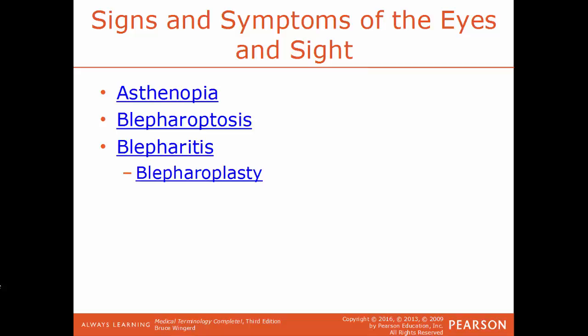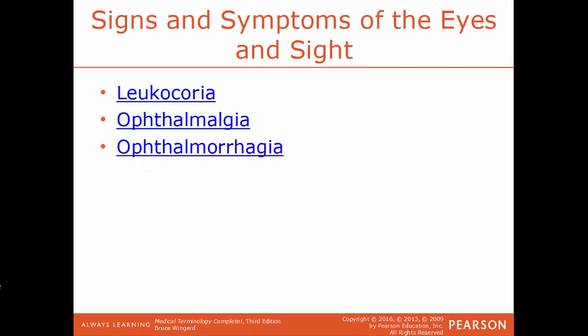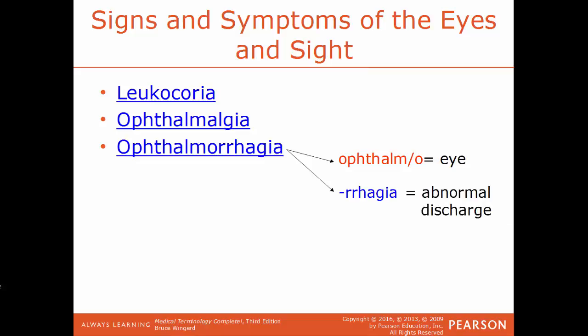Now we'll talk about some particular signs and symptoms of the eyes and sight. Asthenopia is another term for eye fatigue or eye strain — a lack of strength within the eyes. Blepharoptosis is an abnormal sagging or drooping of an eyelid. Blepharitis is an inflammation of the eyelid; if chronic, you may need to surgically repair the eyelid — blepharoplasty, the surgical reconstruction of an eyelid. Leukocoria is having an abnormal white reflection within the retina of the eye. Ophthalmalgia is pain within the eyeball. Ophthalmorrhagia — ophthalmo meaning eye and -rrhagia meaning abnormal discharge — is usually used as a reference to bleeding from the eye.